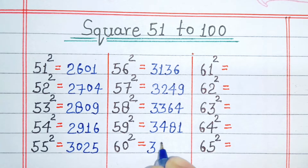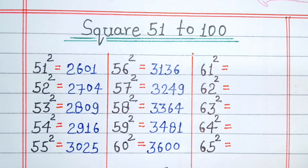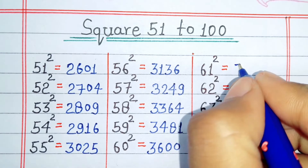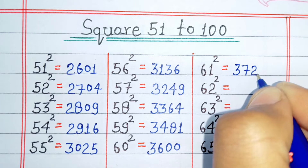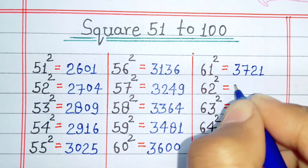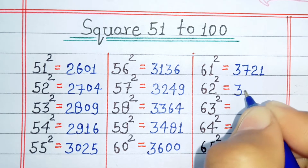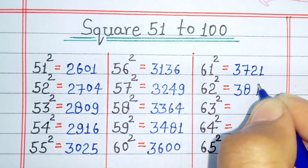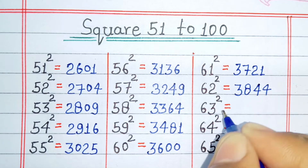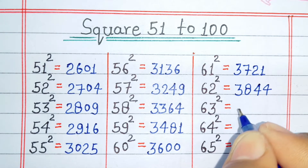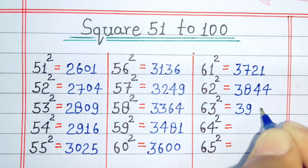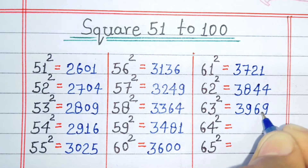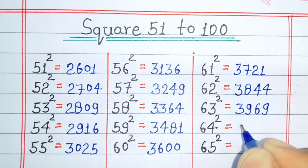Square of 60 is 3600. Square of 61 is 3721. Square of 62 is 3844. Square of 63 is 3969.